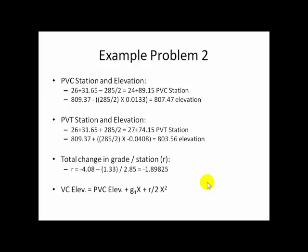So here are the same type of computations but with less idealized numbers. And our PVC station is half of 285 feet less than the PVI station. And you can see the elevation calculated there. 807.47 that occurs at station 24 plus 89.15. The PVT station is computed just the same way.